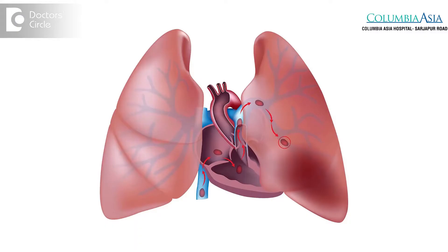Treatment of pulmonary embolism depends on the clinical presentation of the patient. When the patient is hemodynamically compromised — like blood pressure is less than 90 — then we may need to use medications called clot busters, which will dissolve the clot formed in the pulmonary arteries.